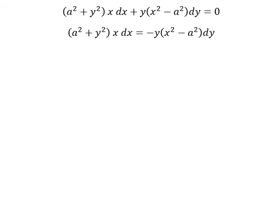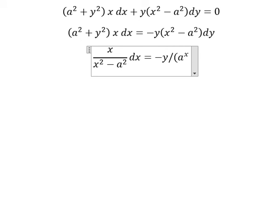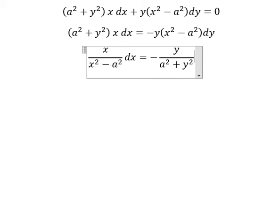So you get x over x squared minus a squared dx equals negative y over a squared plus y squared dy.